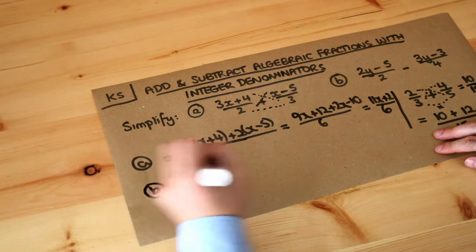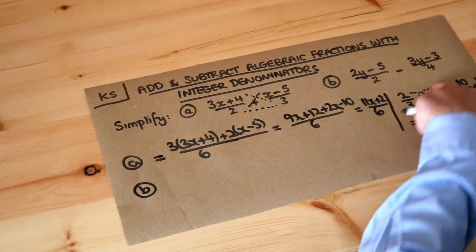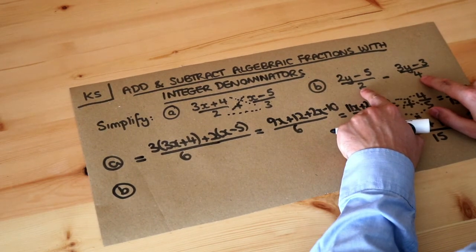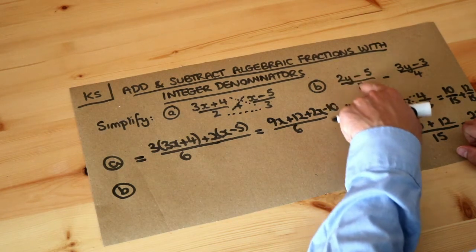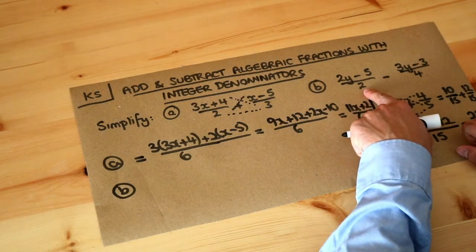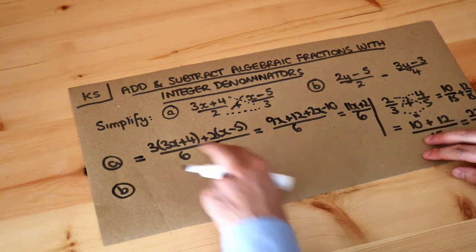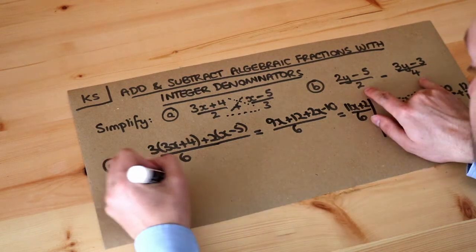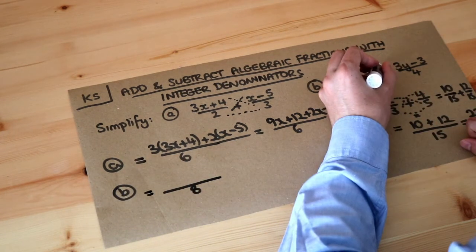Now what about the second one? Now we could avoid this kind of cross multiplication method and use this more traditional approach. Because notice that the lowest common multiple of two and four is just four. So I could just double the top and bottom here. So this would be over four. And then I don't need to affect this fraction at all. But just for simplicity, I'm going to do it in the same way that I did it here. So I'm going to multiply the two denominators so that it's over eight. So two times four is eight. And then I'm going to cross multiply.